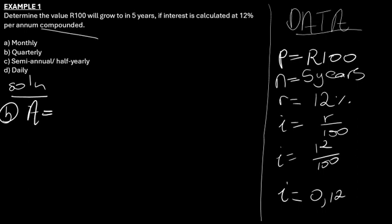A is equal to P times (1 + i) to the power of n. A is the future amount, accumulated amount. So P is our R100, the principal amount that we had at the beginning. Then i is